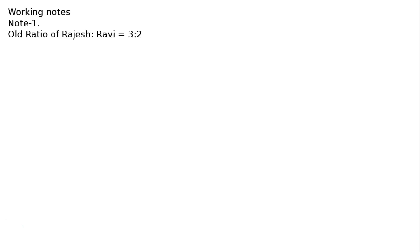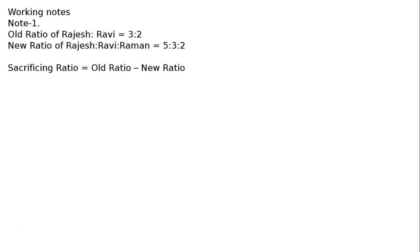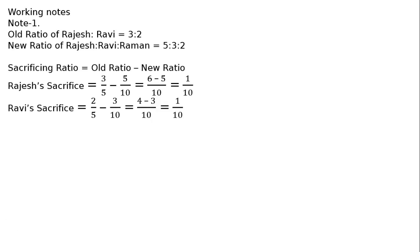Working Note 1: Old ratio of Rajesh to Ravi is 3 to 2. New ratio of Rajesh to Ravi to Raman is 5 to 3 to 2. Sacrificing ratio equals old ratio minus new ratio. Rajesh's sacrifice: 3/5 minus 5/10 — LCM 10 — gives 6/10 minus 5/10 = 1/10. Ravi's sacrifice: 2/5 minus 3/10 = 4/10 minus 3/10 = 1/10. Therefore, sacrificing ratio of Rajesh to Ravi is 1 to 1.